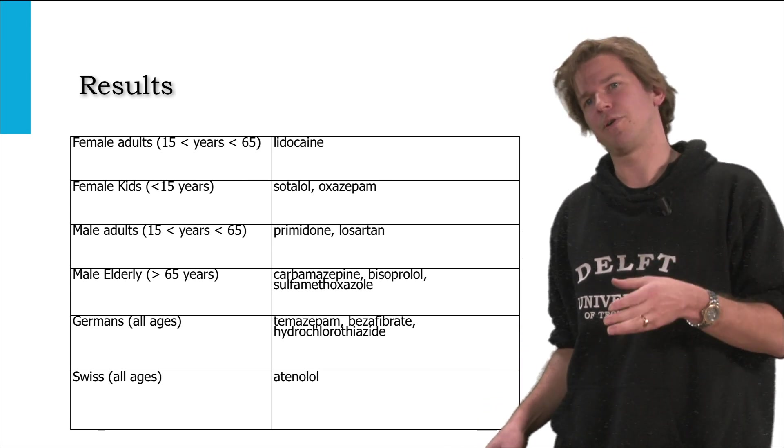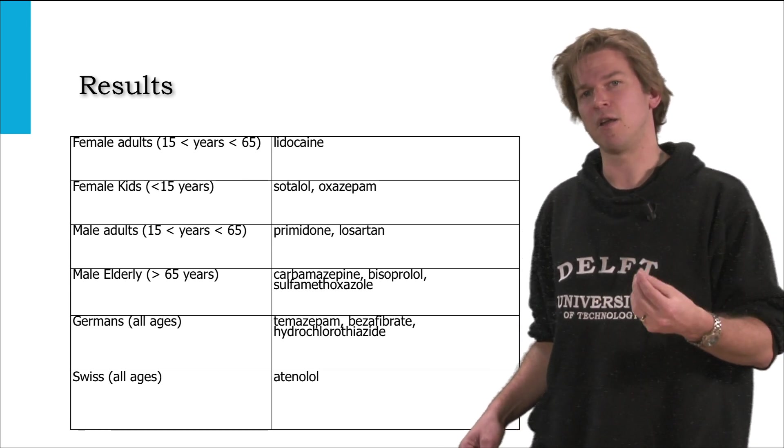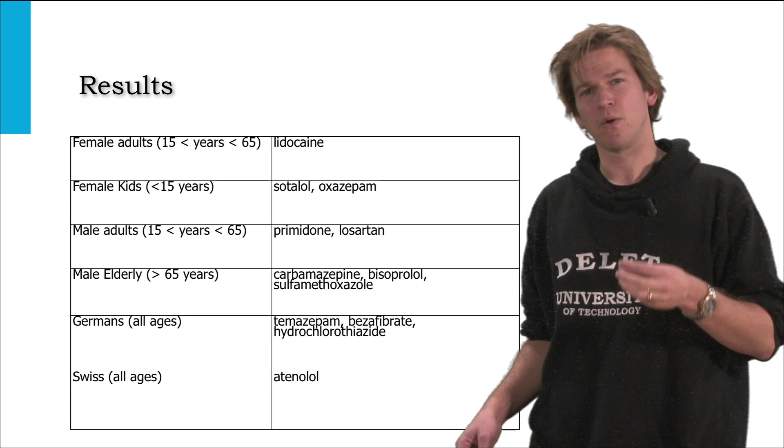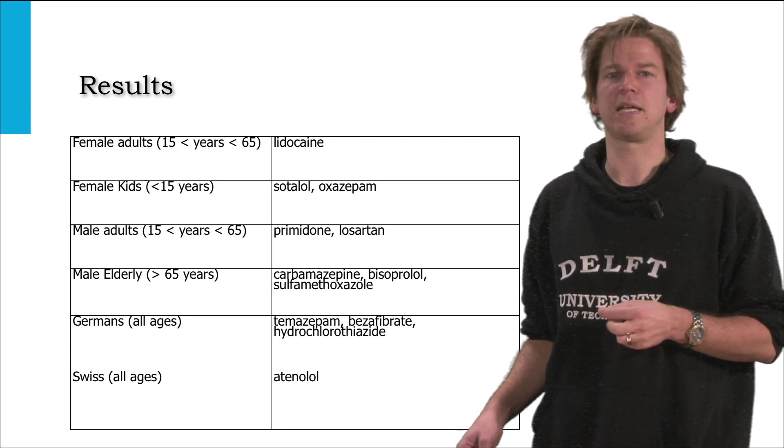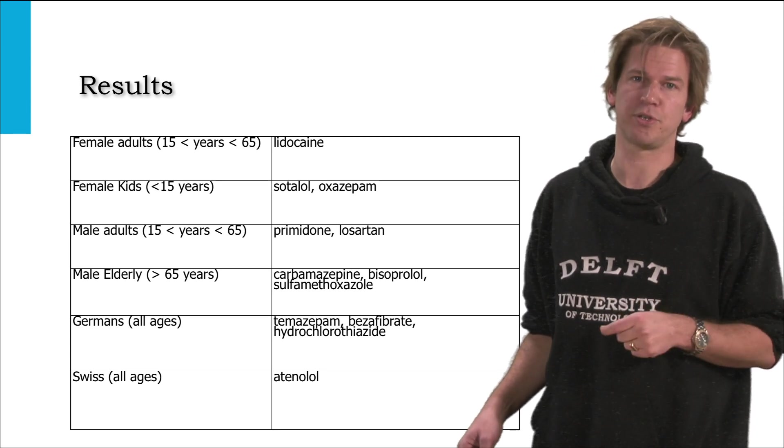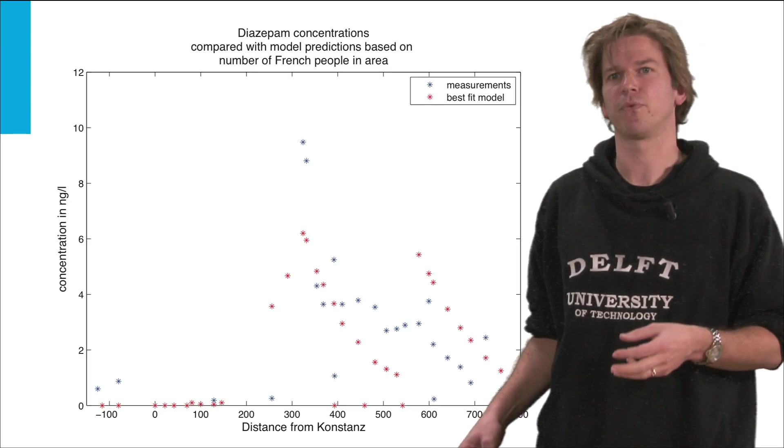Of course we can also learn something from the 20 chemicals that did not have a significant relationship with demographics. It means that humans are most likely not the main cause of pollution in the river of that chemical.